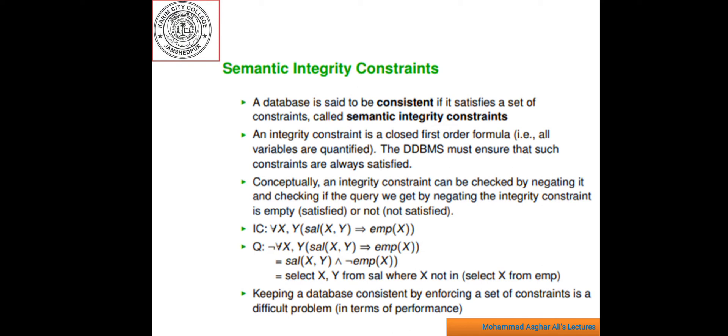Another important and difficult problem for a database system is how to guarantee database consistency. It is a big problem. How? A database consistency, correct or not. A database state is said to be consistent if the database satisfies a set of constraint called Semantic Integrity Constraint.